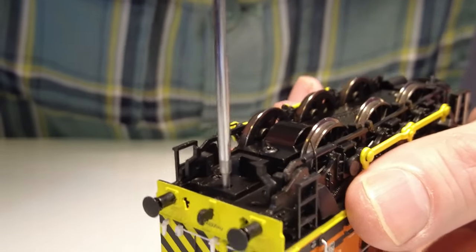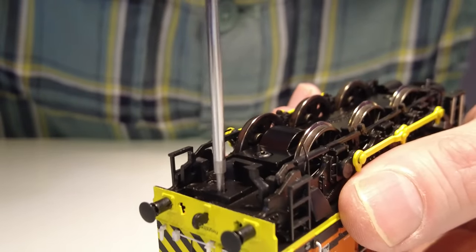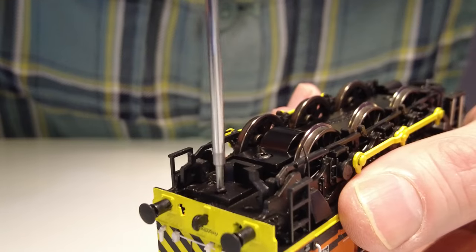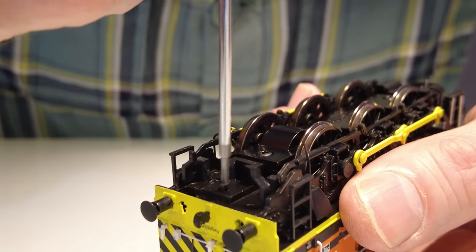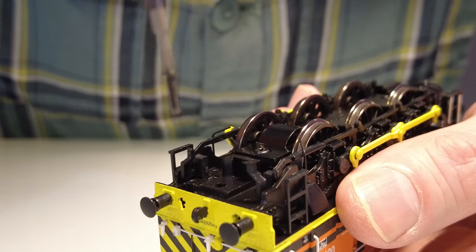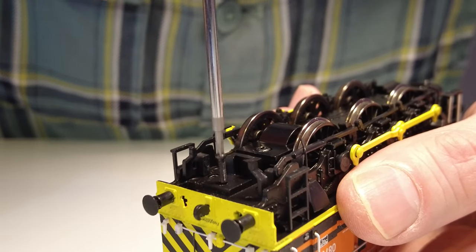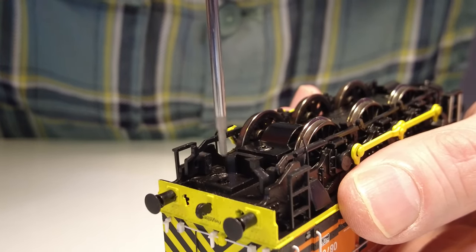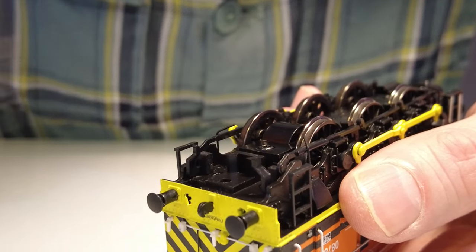And then you want to get a magnetic tip screwdriver ideally and take that screw out. The magnetic part's useful there because it just stops the screw falling off and it helps you get it from what's quite a deep hole. So I'll just take that out.